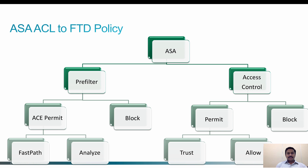When you migrate ACLs to Firepower Threat Defense, the ASA ACLs have two simple actions: permit and deny. If you migrate ACL policies to FMC, you can either migrate to a prefilter policy or an access control policy. If you choose prefilter policy, then ACEs with deny as a rule will be migrated to block.